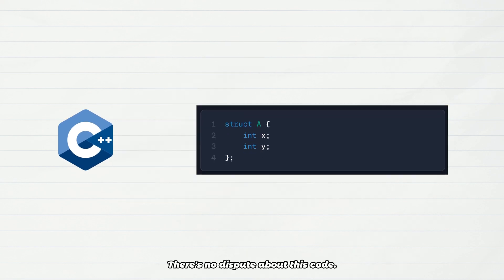Let's start with a basic class. There's no dispute about this code. On a 64-bit system, an int occupies four bytes with no additional overhead. So both x and y are four bytes each, thus using the sizeof function will return eight bytes for the size of struct A.